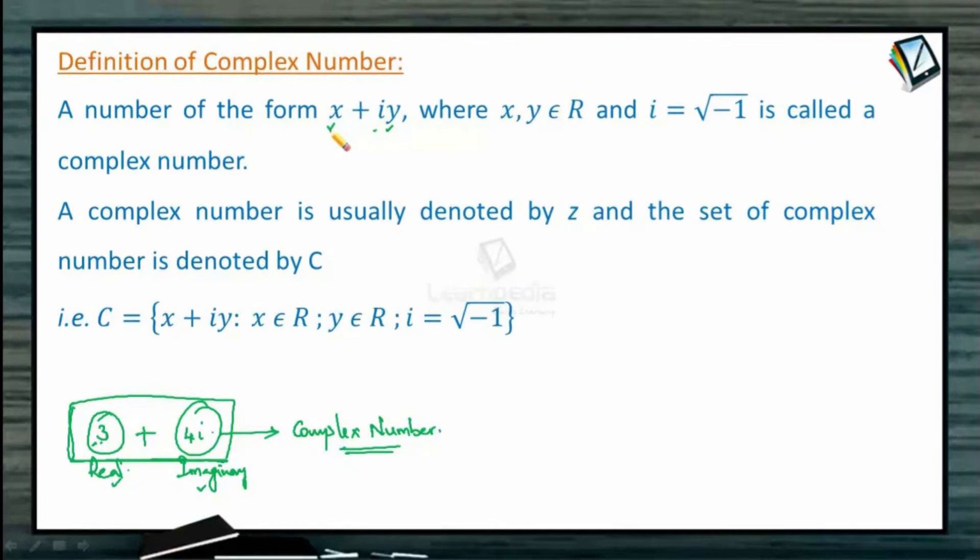Such a combination of a real number with an imaginary number is called a complex number. So how will a complex number be generally? It will have a real number, real part, plus an imaginary part.